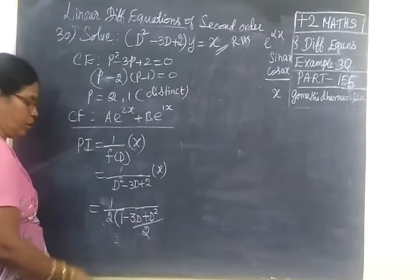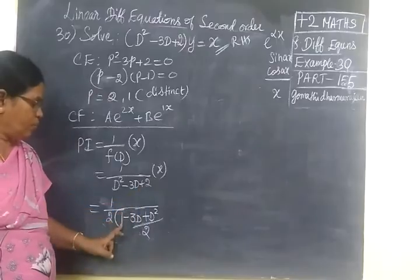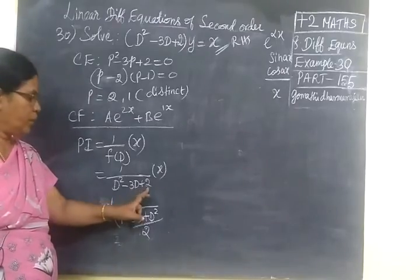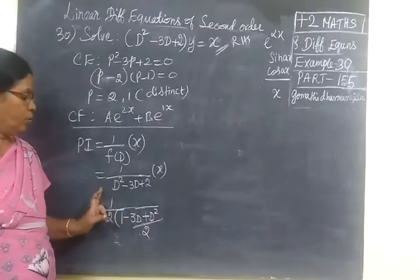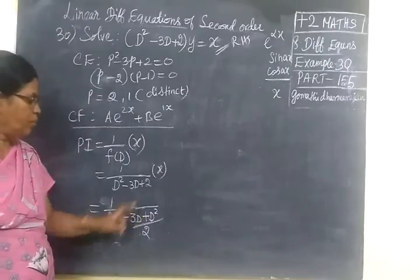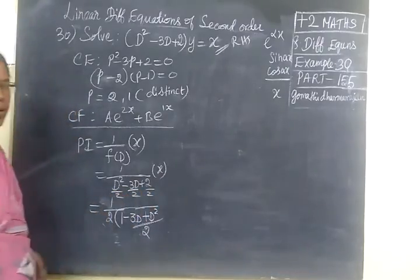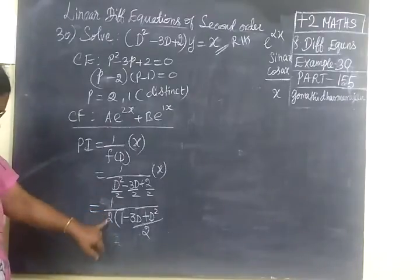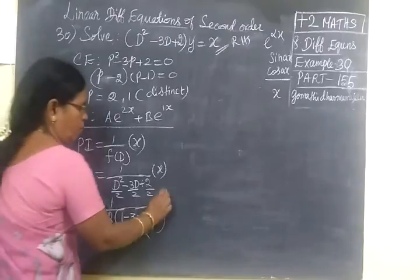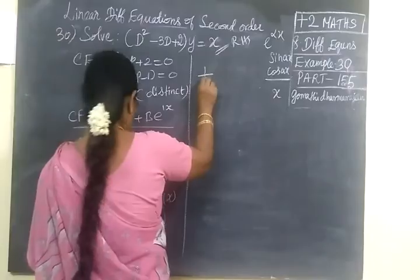1 by 2, 1 minus 3D by 2. Once we take the number 2 outside, we write in the denominator, so 3 by 2. Everything divided by 2. So 1 by 2 which is 3D by 2, then D squared by 2. Then next is 1 by 2.